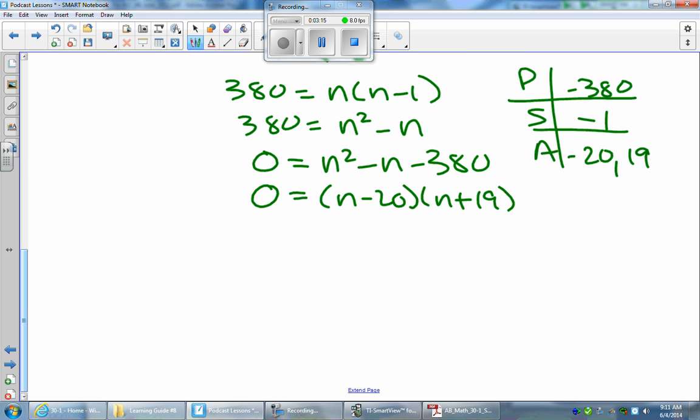All right, so what are the two solutions here? N could be 20 or N could be negative 19. But remember, we have objects that we're selecting from. We're selecting toppings. So there's no such thing as a negative number of toppings. So my solution will be 20 toppings to choose from all in all.